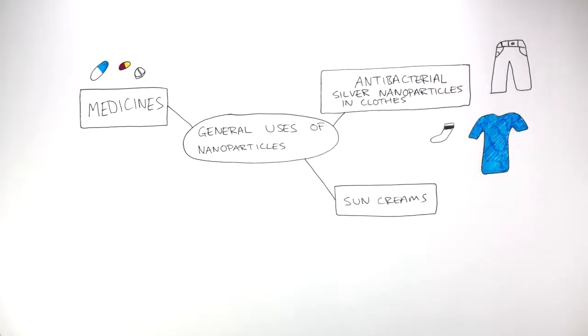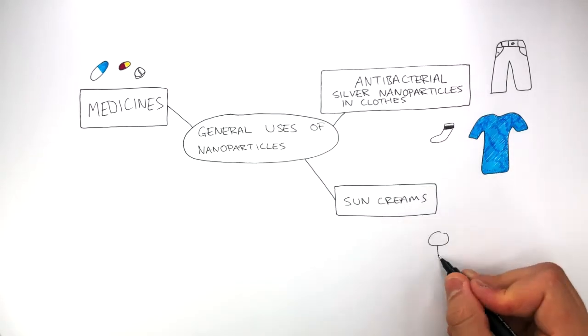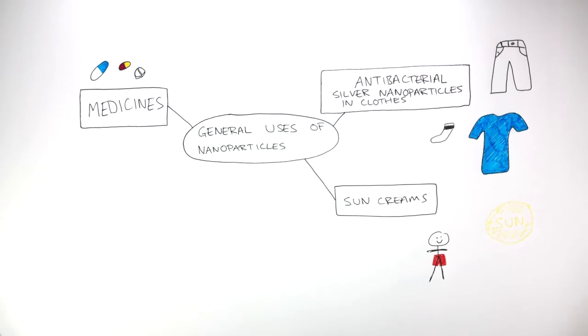Some sun creams contain nanoparticles. If someone's on holiday and there's a lot of sun emitting UV radiation, then the sun cream containing nanoparticles can protect that person from getting sunburnt.